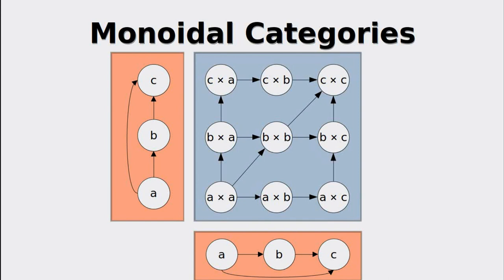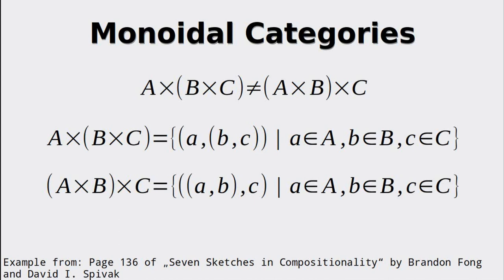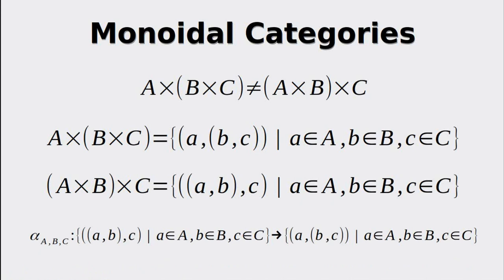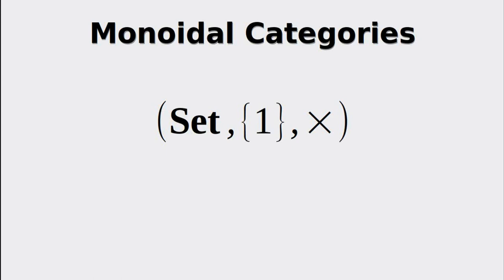One example of a monoidal category is Set, the category of sets, together with the cross product as the tensor product. This creates some issues for our definition: is the cross product really associative? As it turns out, no, it isn't — the parentheses are obviously shifted. However, this is not a problem since the two sets we can see here are isomorphic. The only thing we need to do is to shift the parentheses back, which can be done by the alpha transformation. Now the tensor product is associative.